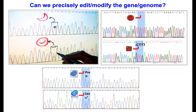The question we and others ask is: can we precisely edit or modify the gene or genome? Certain genetic disorders — the most common in this part of the world — like sickle cell anemia, thalassemia, or lysosomal disorders like Gaucher's disease: can we precisely edit these errors permanently in the patient cells? That is the question we and others ask.